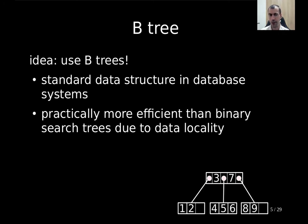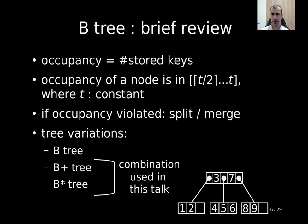Let us briefly review what a B-tree is. A B-tree has internal nodes and leaves. Internal nodes have pointers to the children, while leaves don't have pointers. The key concept of the B-tree is the occupancy — the number of stored keys in a node — which ranges from t/2 to t, where t is a chosen constant. If the occupancy gets violated because we inserted or deleted a key, we either split a node into two or merge two nodes into one.